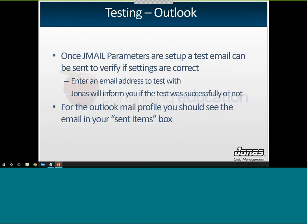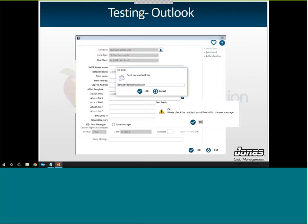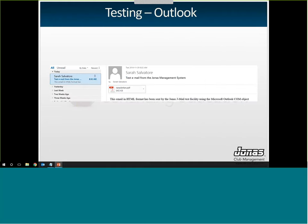Once your parameters are set up — whether Outlook or SMTP — you can send a test email right from those parameters. For Outlook, click on Test Email at the top, enter an email address to send the test to, and Jonas will let you know if it was sent successfully. You'll also see it in your Outlook Sent folder. In this example, the test result message confirms it was successful, and you can see the sent message with the attached file in Outlook's Sent folder.